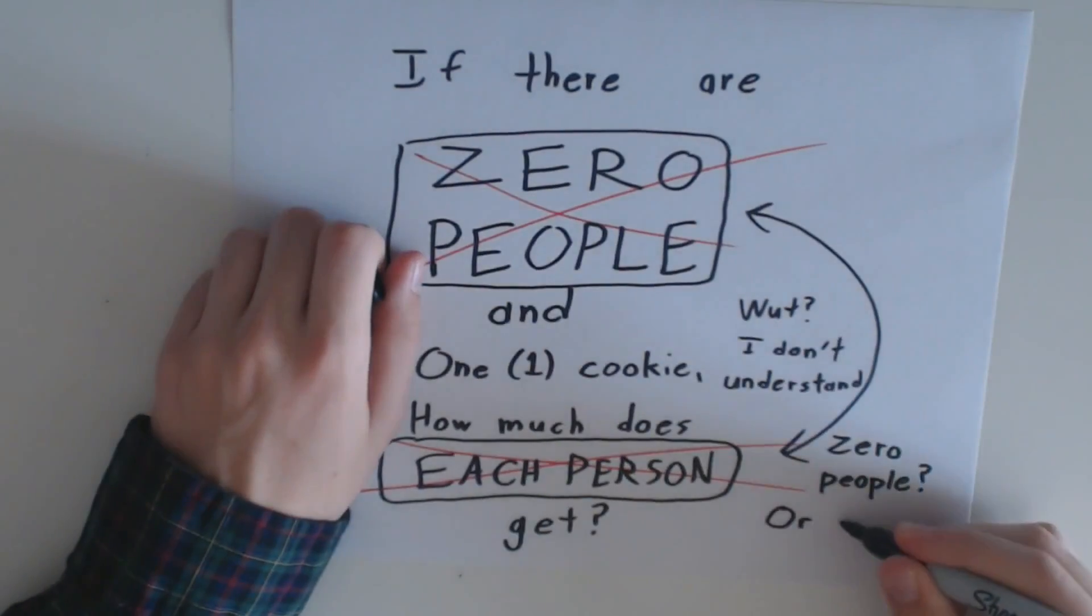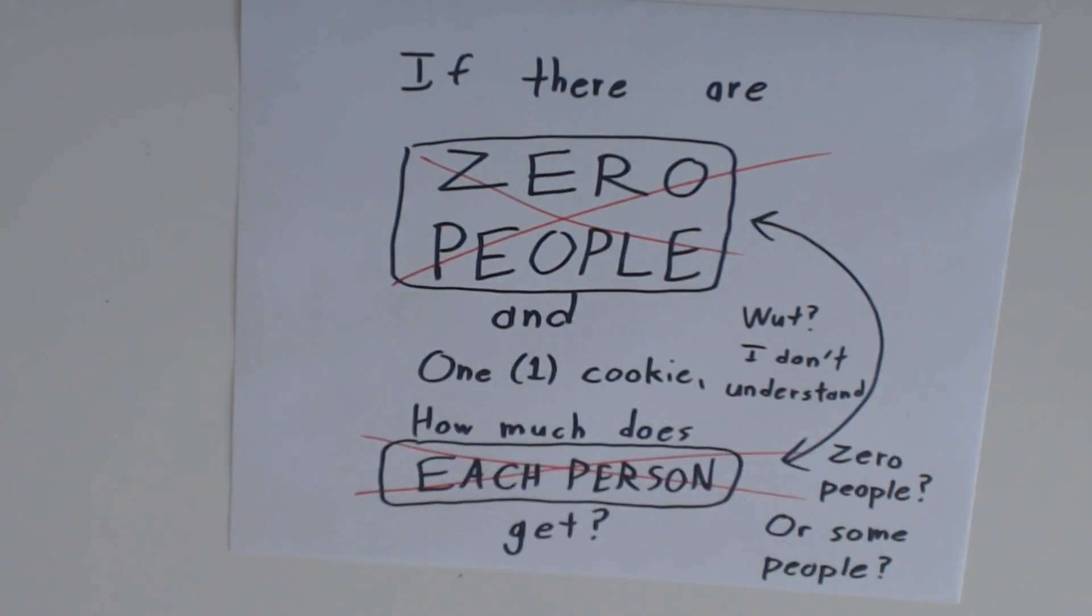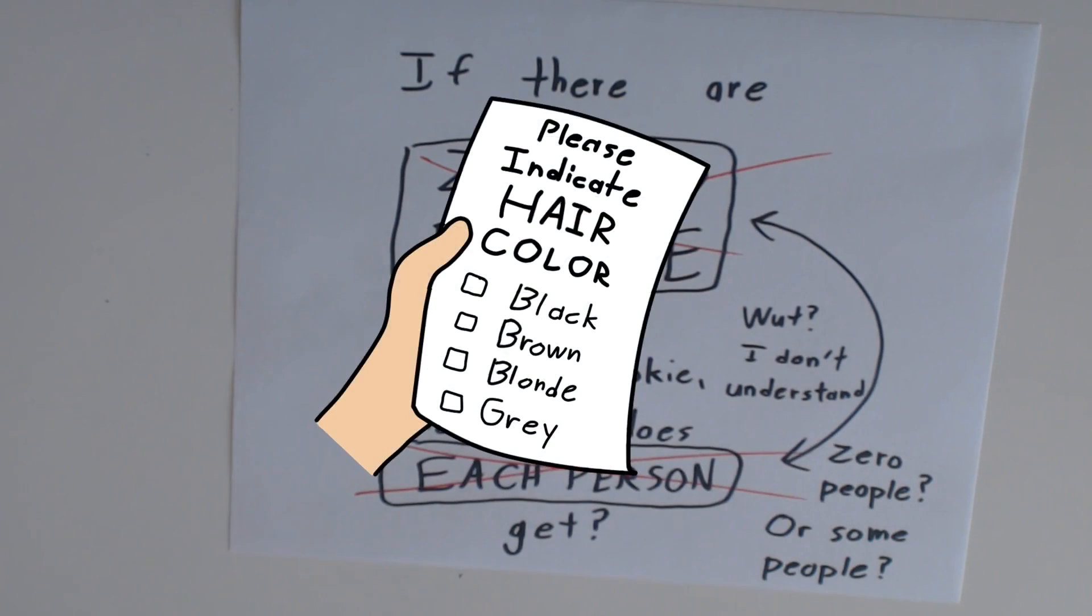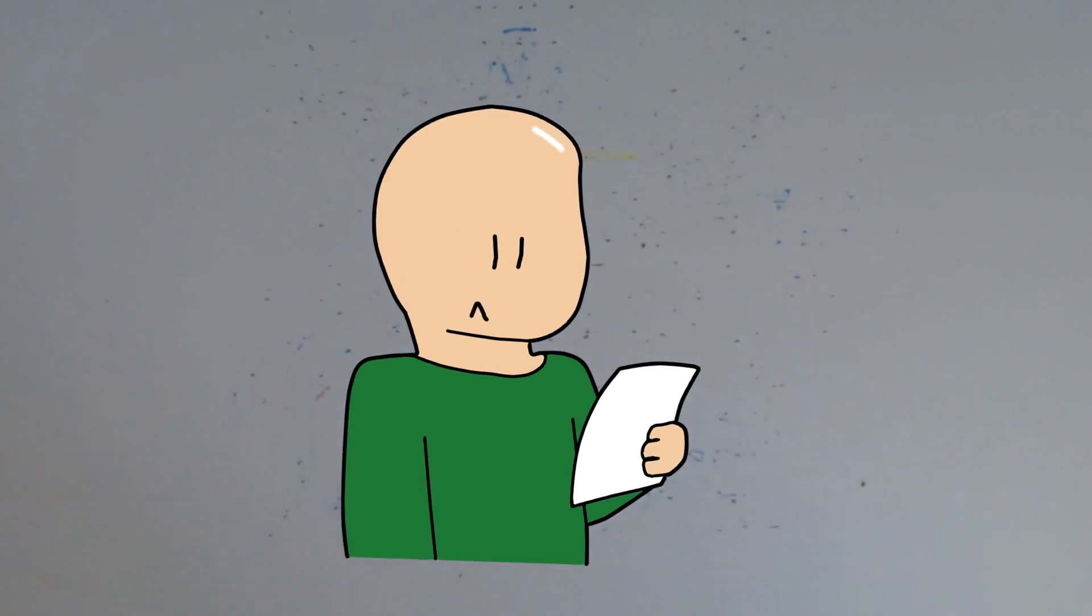The question is contradictory. First it says that there aren't any people, but then it asks how much those people get. It's like asking a bald man what color his hair is. The question just doesn't make sense to begin with.